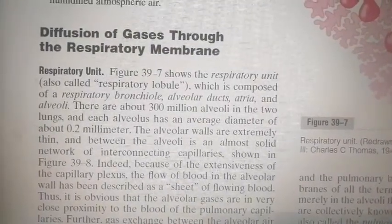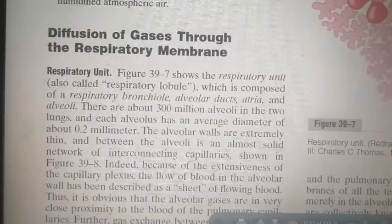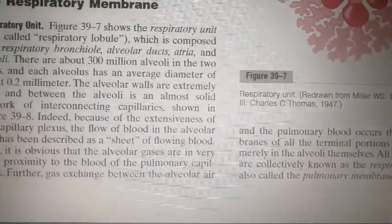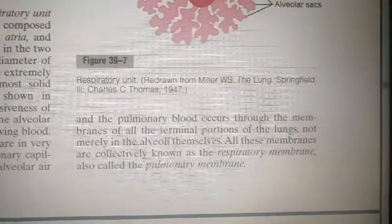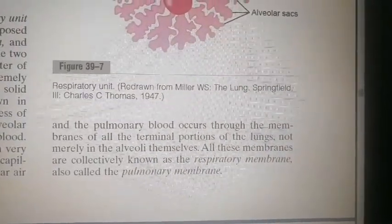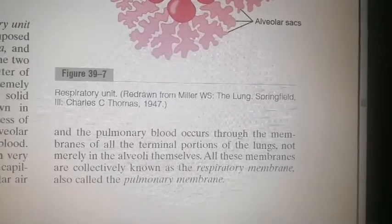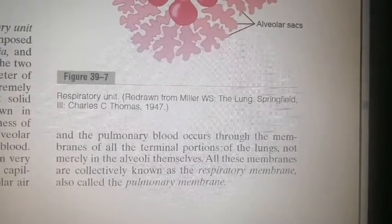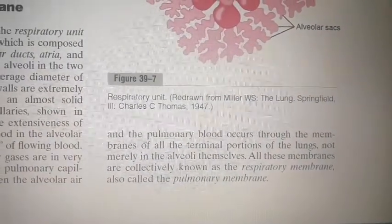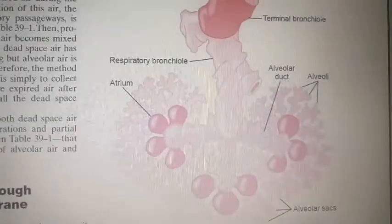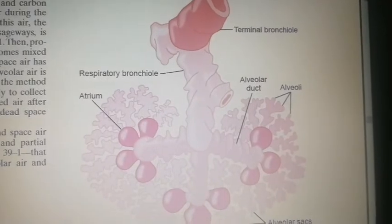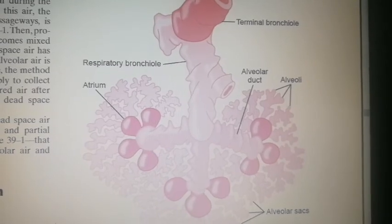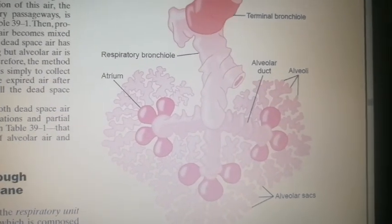There are capillaries around the alveolar wall where gaseous exchange occurs, and these capillaries are in close proximity to the alveoli. Gas exchange between the alveolar air and the pulmonary blood occurs through the membrane of all the terminal portions of the lungs, not merely in the alveoli themselves. All these membranes are collectively known as the respiratory membrane, also called the pulmonary membrane. This is the diagram of a respiratory unit showing terminal bronchioles, respiratory bronchioles, alveolar ducts, alveoli, atria, and alveolar sacs.